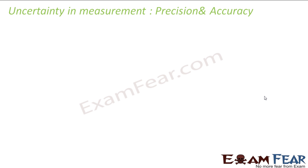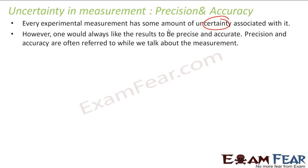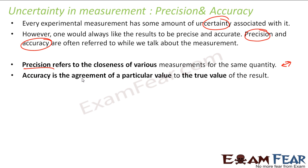When we talk about uncertainty in measurement, we should also talk about precision and accuracy. For every experiment, we have some amount of uncertainty associated with it, but we would like our experiments to be best — we want everything to be precise and accurate. Precision refers to the closeness of various results of the same experiment. Accuracy is how close the result is to the true value. For precision, I don't care about the true value, but for accuracy, I care about the true value.